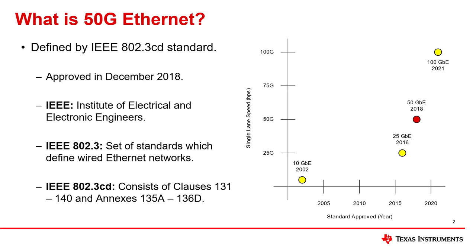50 gig Ethernet was preceded by 25 gig Ethernet, which was approved by the board in June 2016. Let's take a look at some of the key differences between 25 and 50 gigabit Ethernet.